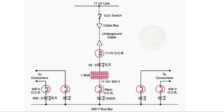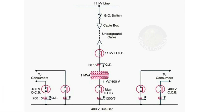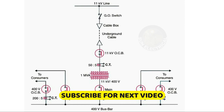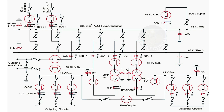Hi friends. SLD means single line diagram, electrical. We are converting 11kV to 440 voltage, 3-phase, into a single line diagram. There is also a 66kV and 11kV substation layout which will be fully explained — you can skip that video — but by the end you will understand the single line diagram.